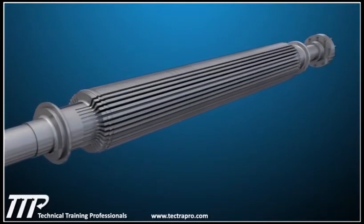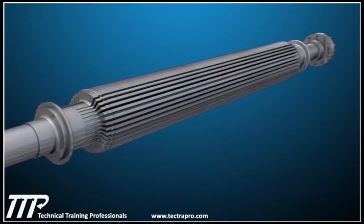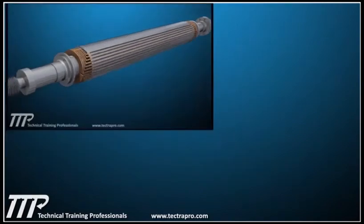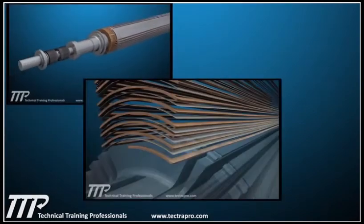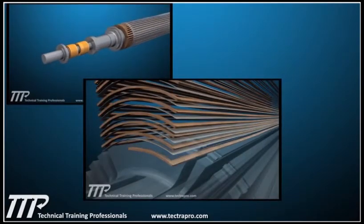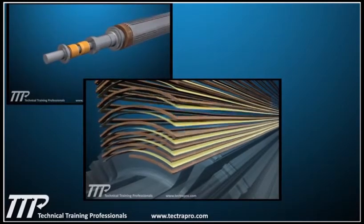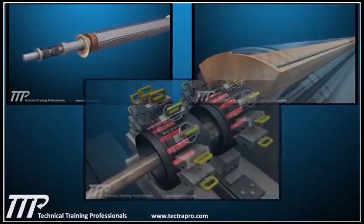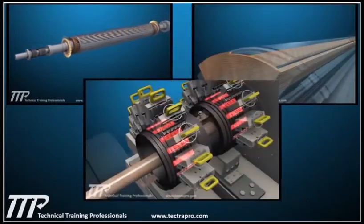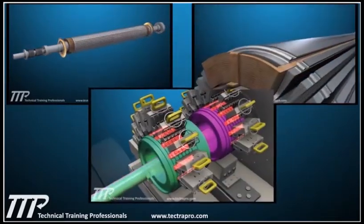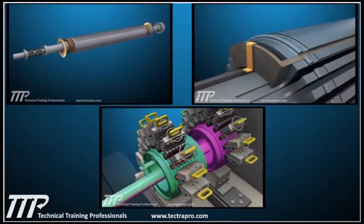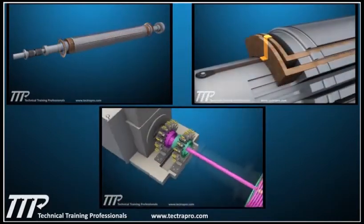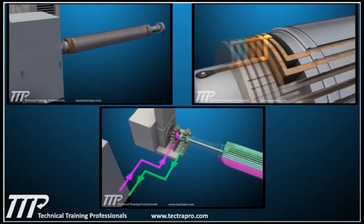In the Rotor chapter, Generator Rotor Design, Winding Installation, and Electrical Flow Path are described. This chapter provides an in-depth look at the assembly and function of a generator rotor.